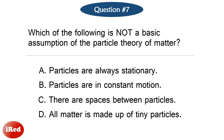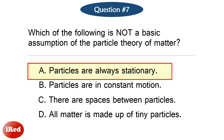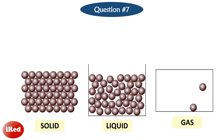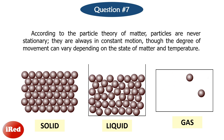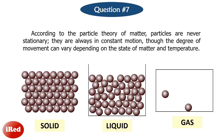Question number seven. Which of the following is not a basic assumption of the particle theory of matter? The correct answer is letter A: particles are always stationary. According to the particle theory of matter, particles are never stationary. They are always in constant motion, though the degree of movement can vary depending on the state of matter and temperature.